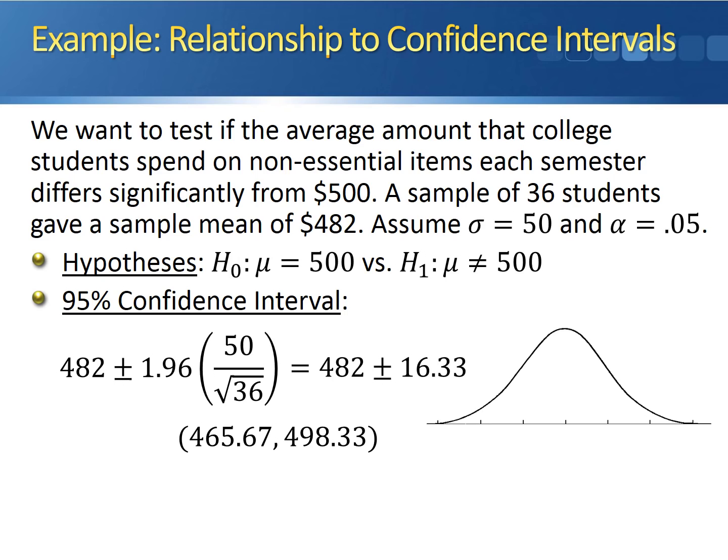What we can do now is plot this on the normal distribution to get a visual representation. The interval gets centered at the sample mean 482 and extends out to 465.67 and 498.33.